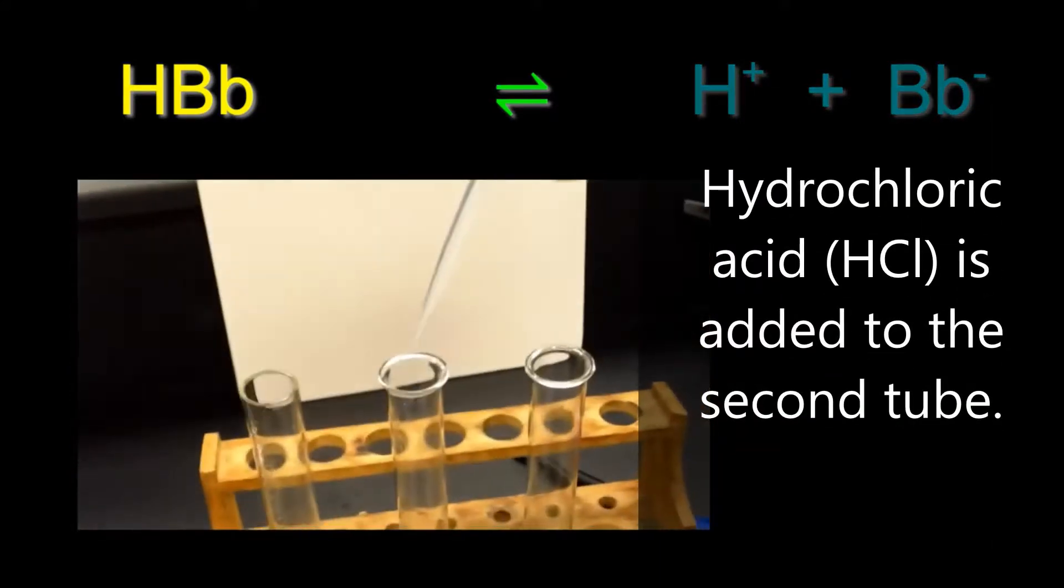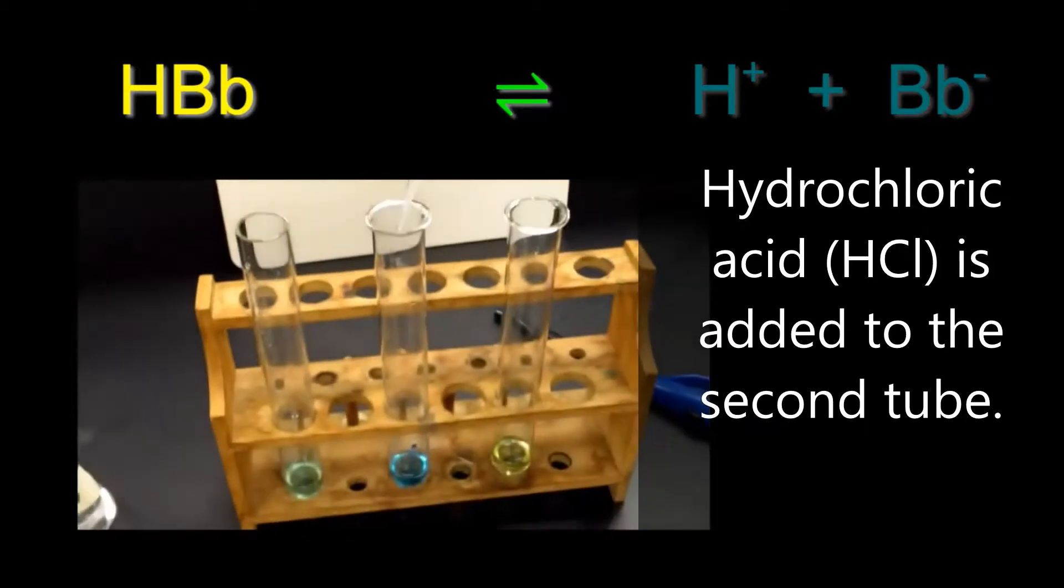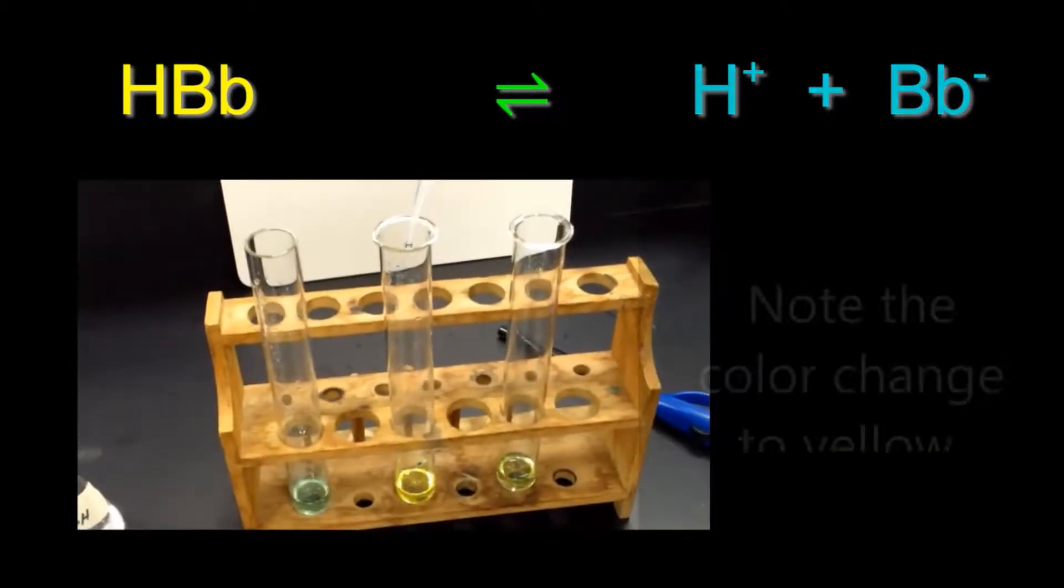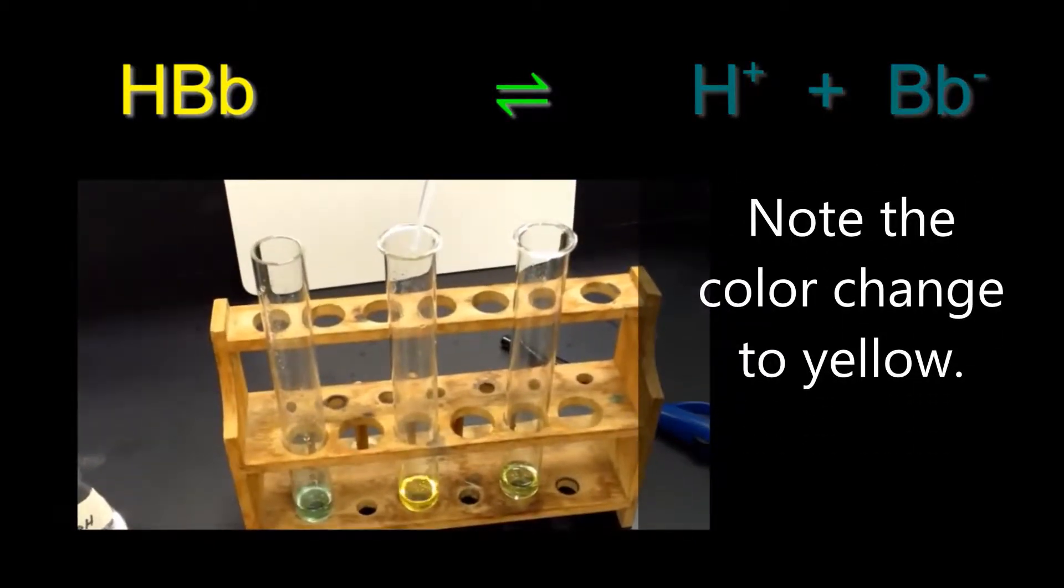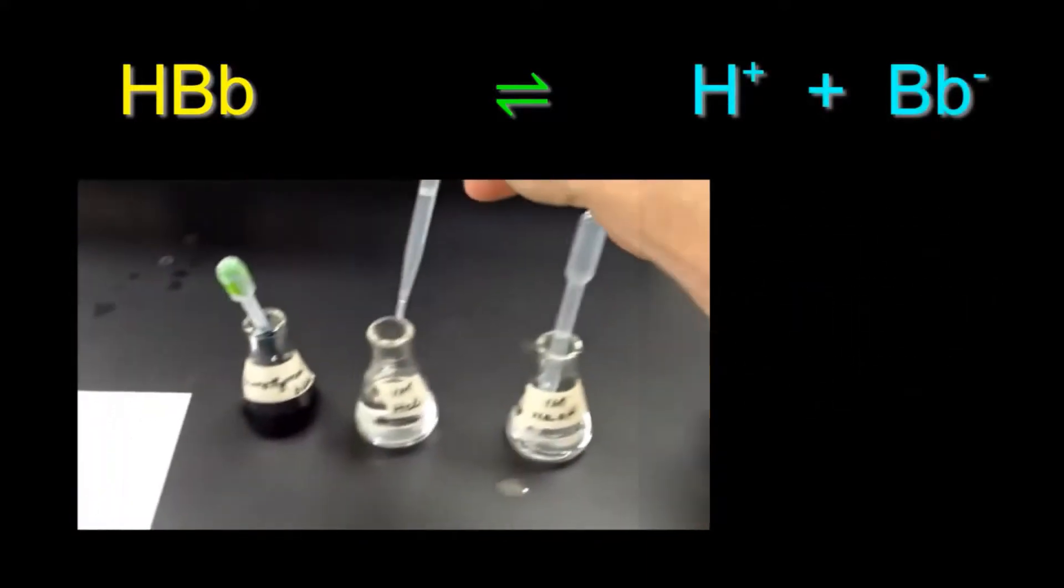Next, we'll add hydrochloric acid, HCl, to the second test tube. Notice that the color in the test tube turns from blue to yellow.